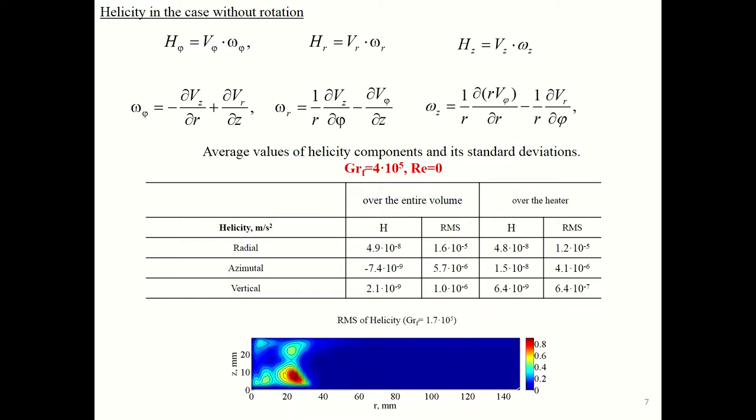The flow in our system is very complex and consists of different structures of different scale levels. For better understanding, we divided the helicity into three parts: azimuthal helicity, radial helicity, and vertical helicity. There in the table are mean values of each component of helicity and their standard deviations. For the case without rotation, it's important to see that the value of mean helicity is much smaller than the value of RMS. There are the fields of RMS of helicity, and RMS is concentrated in the area of secondary structure formation. We can assume that secondary structures give only local value of RMS, and only large-scale flow of potential special structure can lead to helicity formation.